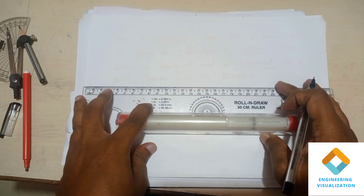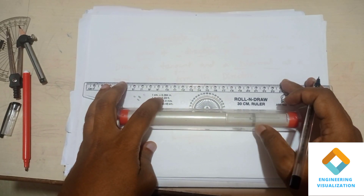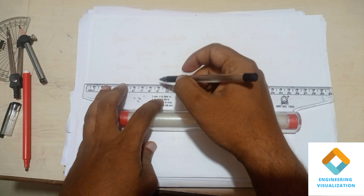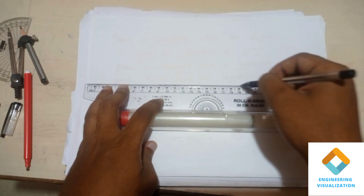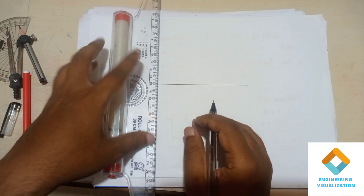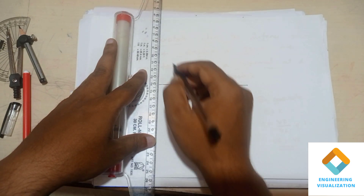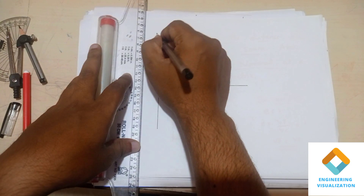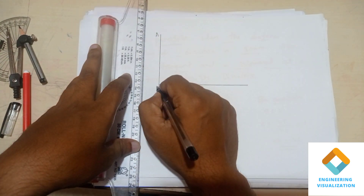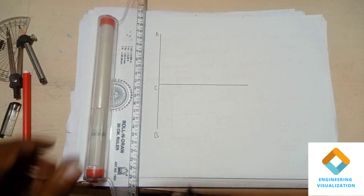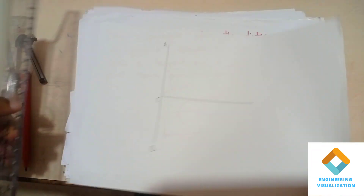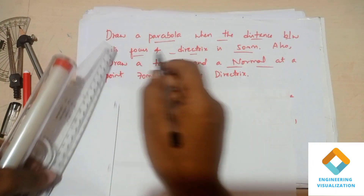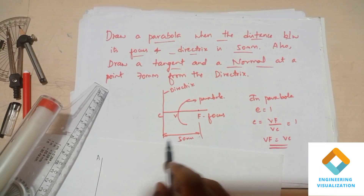First, draw one horizontal line of any length. Perpendicular to it, draw one vertical line. This vertical line is called the directrix; label it A-B, and mark point C on the axis. Now we have to take a distance of 50mm, which is the distance between the focus and the directrix.